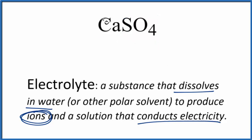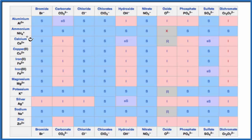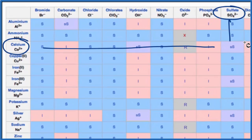So the question is whether CaSO4, when we put it in water, is it going to dissolve? In general, sulfates are soluble, but there are a few exceptions. We find calcium right here, and then way over here is the sulfate. Going over and down, we see SS — that means it's slightly soluble. A little bit will dissolve, not a whole lot, but some of it will dissolve and produce ions.